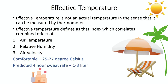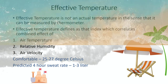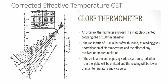Now we are moving toward effective temperature. Effective temperature is not an actual temperature that can be measured by a thermometer. It is defined as the index which correlates the combined effect of air temperature, relative humidity, and air velocity. The comfortable air temperature is 25 to 27 degrees Celsius for the average person. The corrected effective temperature includes the globe thermometer reading. In the chart, the left side shows globe thermometer temperature readings, the right side shows wet bulb temperature readings, and the middle shows air velocity cross-references, from which the corrected effective temperature is derived.